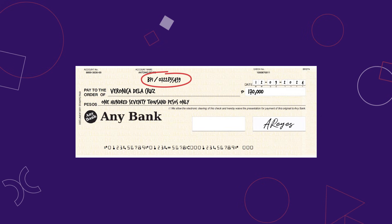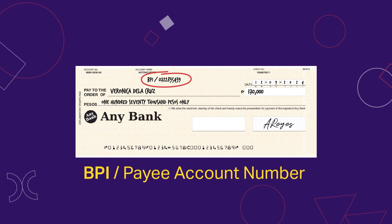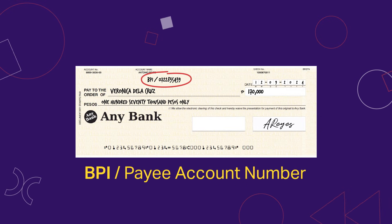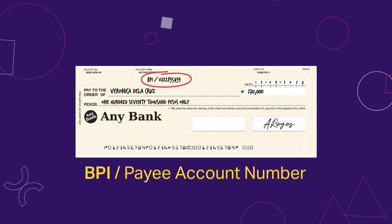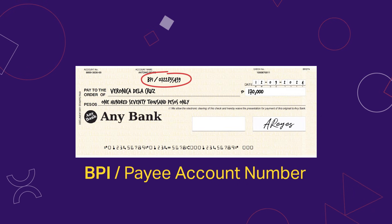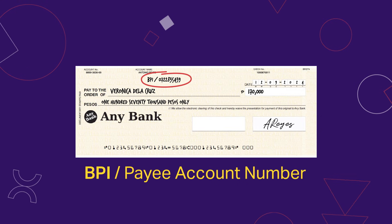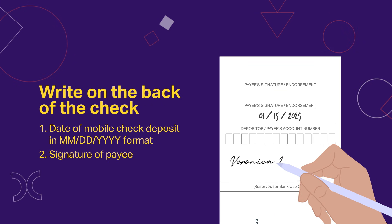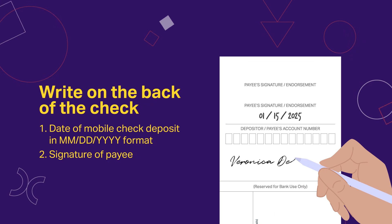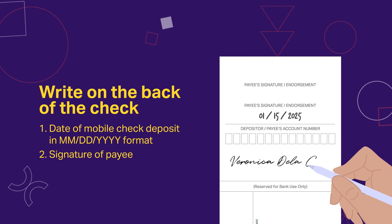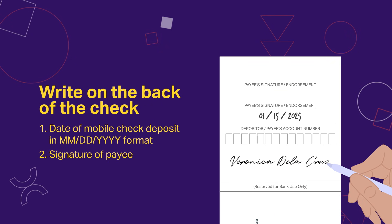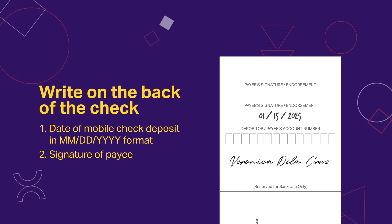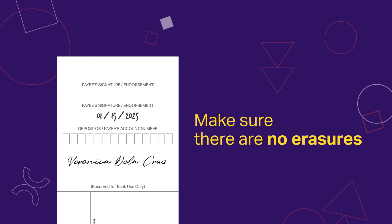On top of the payee name, write BPI slash and then the account number. On the back, write these details clearly. Let's avoid those erasures.